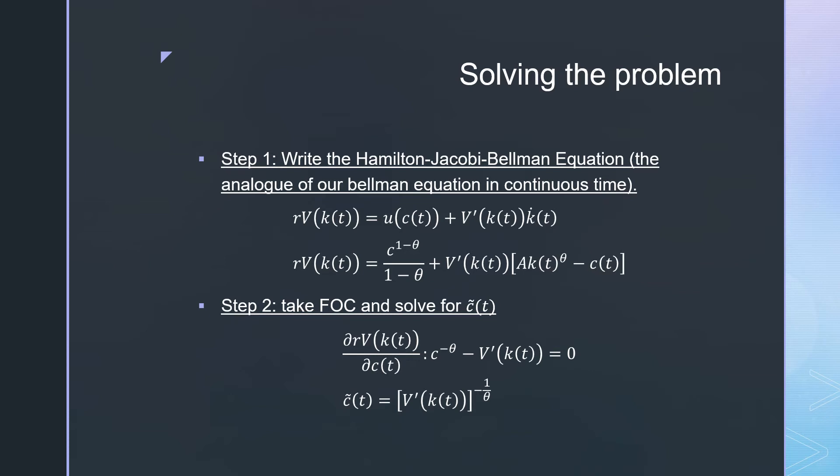Step one is to write down our Hamilton-Jacobi-Bellman equation. This is just plug and chug. We plug in our instantaneous preferences being the CRRA type and our law of motion, which we specified before. Then step two: take our first order conditions and solve for our tentative policy function.